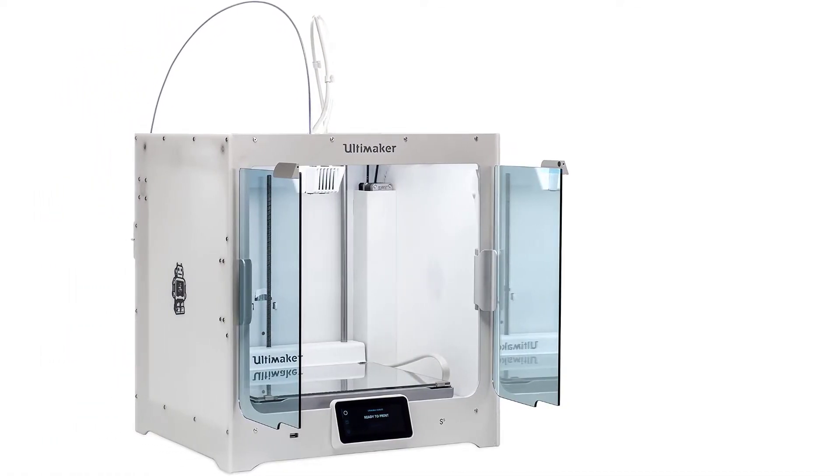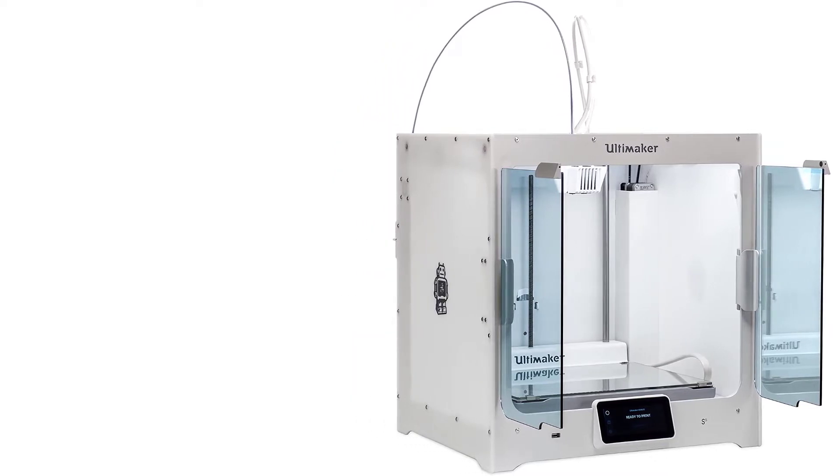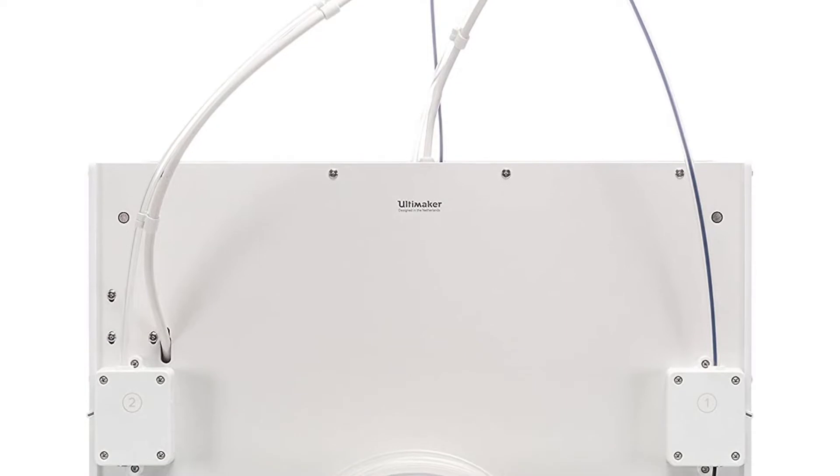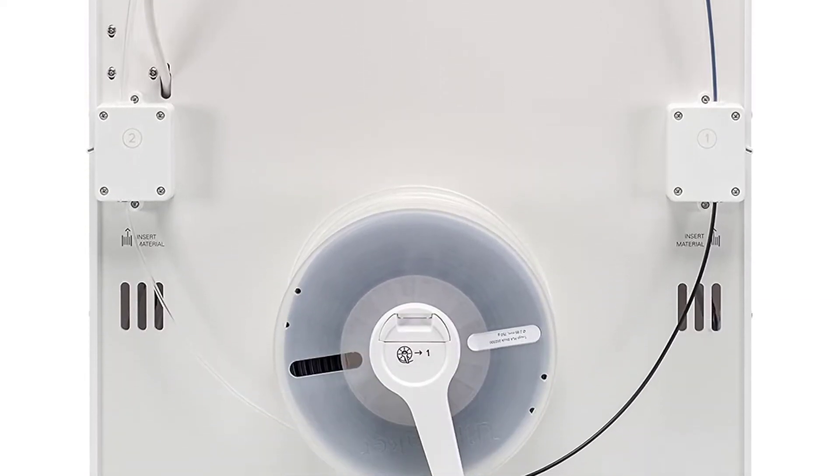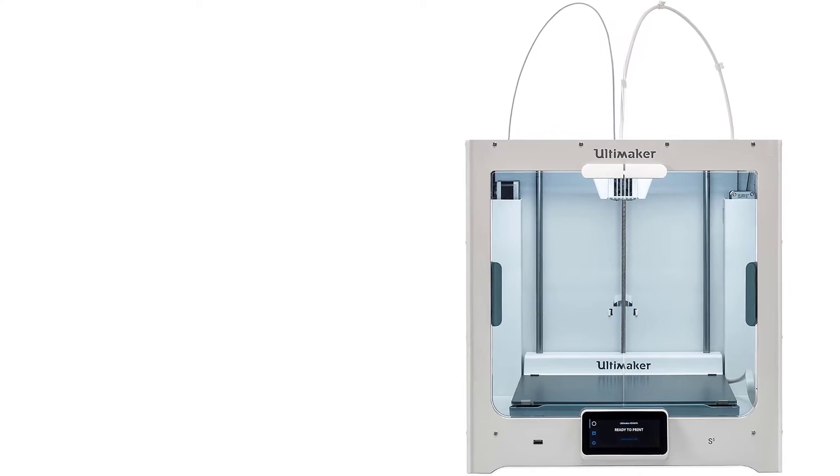One of the S5's best features is its dual-extrusion technology. Having this technology allows you to simultaneously print different types of materials and is a huge time-saver. Additionally, the printer is equipped with sensors that alert you when filament runs out.